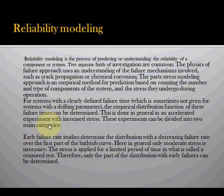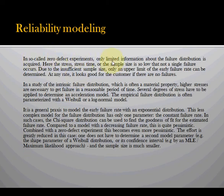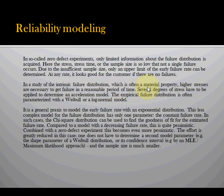These experiments can be divided into two main categories. The first is early failure rate or infant failure — a decreasing failure rate over the parts' bathtub curve — where only moderate stress is necessary. The second is so-called zero-defect experiments, where only limited information about the failure distribution is required, and the stress time and sample size are low, so not a single failure occurs due to insufficient sample size — only an upper limit of the early failure rate can be determined. For a study of the intrinsic failure distribution, which is often a material property, higher stresses are necessary to get failure in a reasonable period of time.